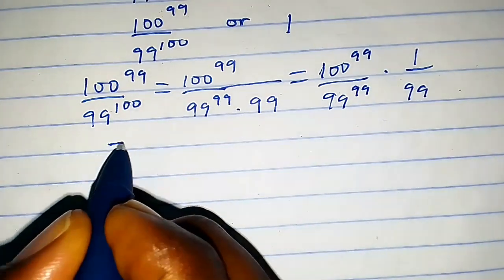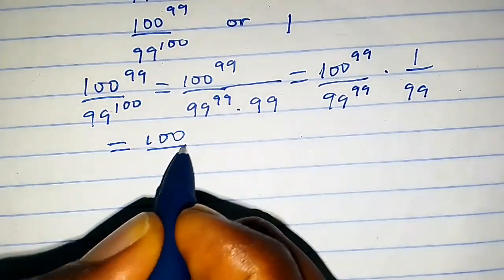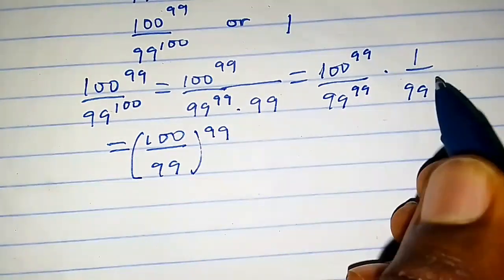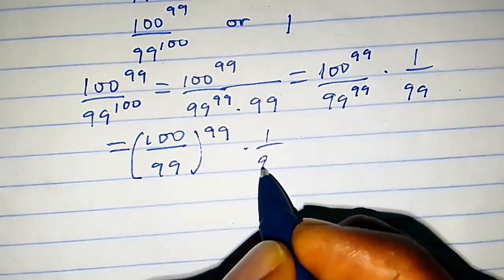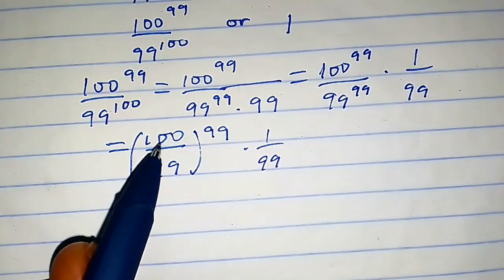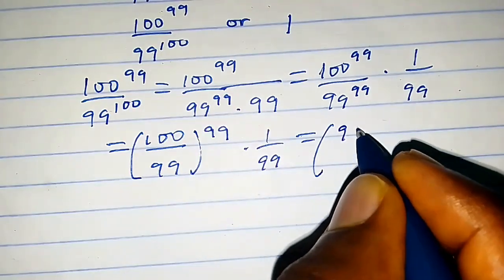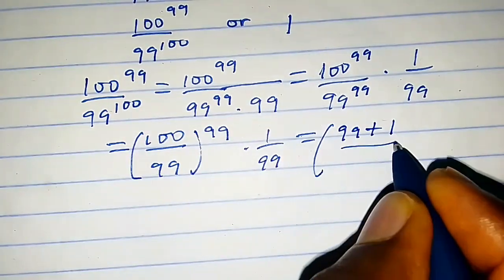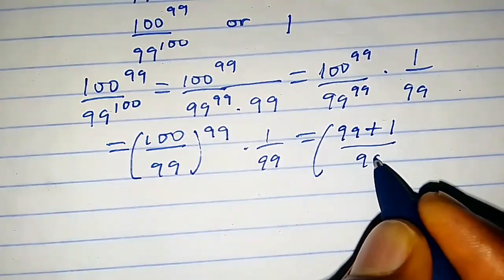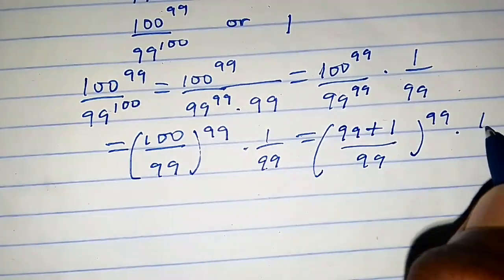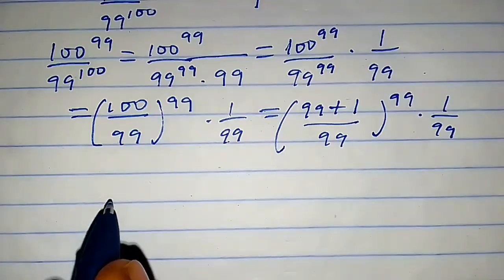This equals (100/99)^99 × (1/99). Now let's consider the numerator, which is 100. We can write 100 as 99 + 1, so we have ((99+1)/99)^99 × (1/99).